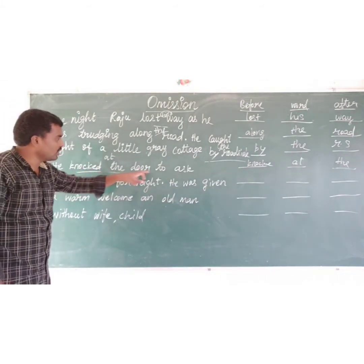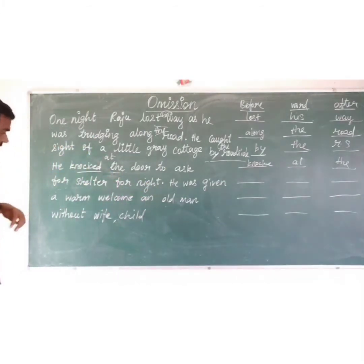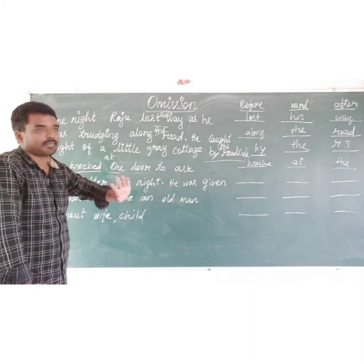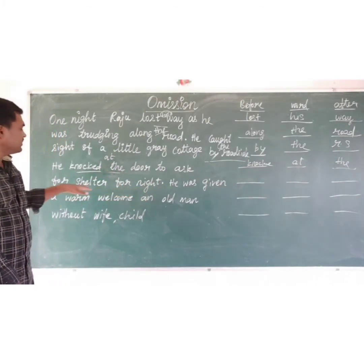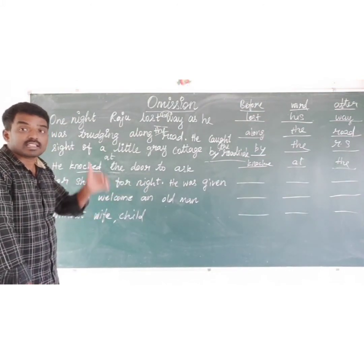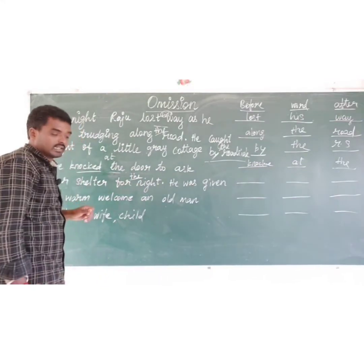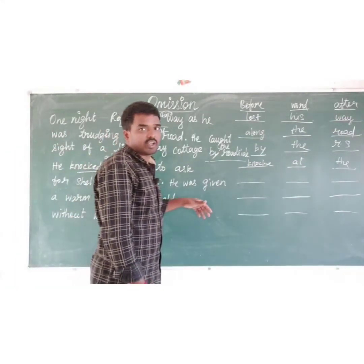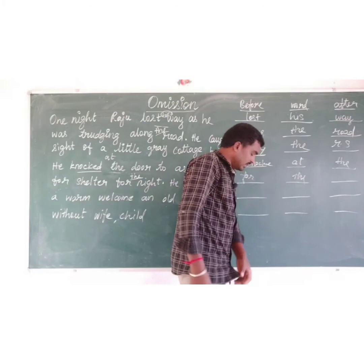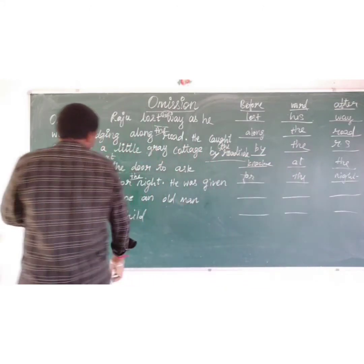He knocked at the door to ask for shelter — for night. 'For dash night.' That particular night, so we want to use 'the'. 'For the night.' The missing word is 'the'. Before word: 'for'. After word: 'night'.